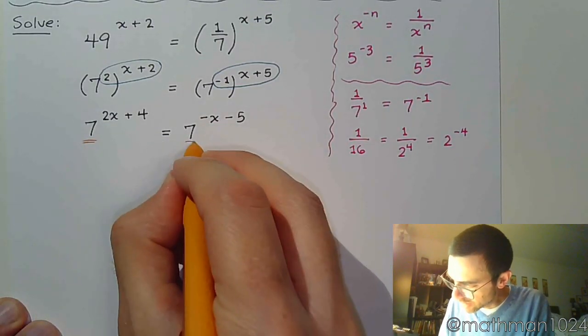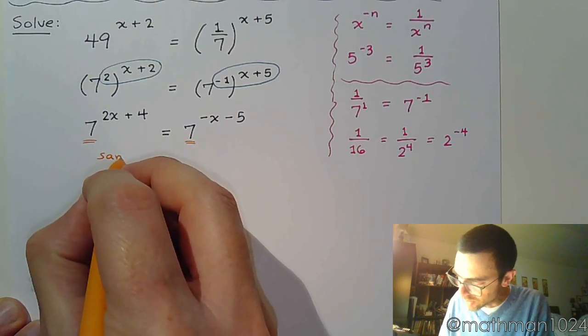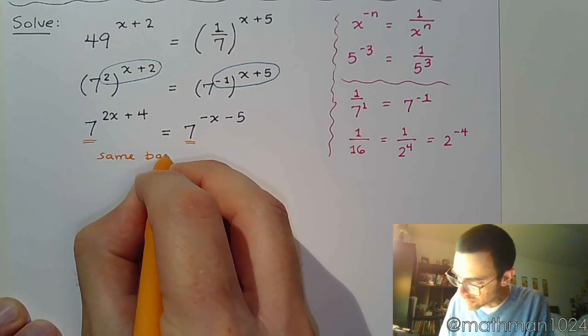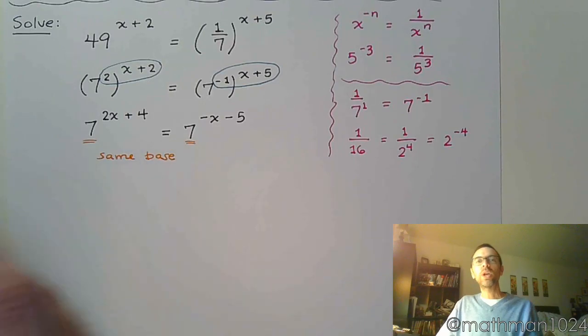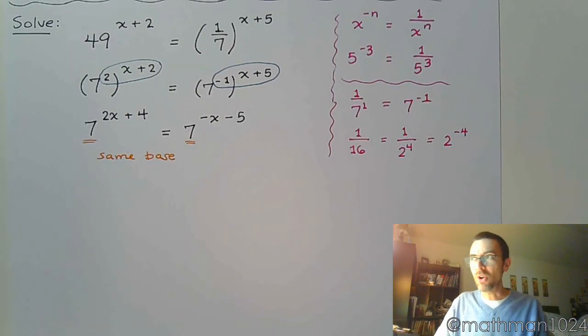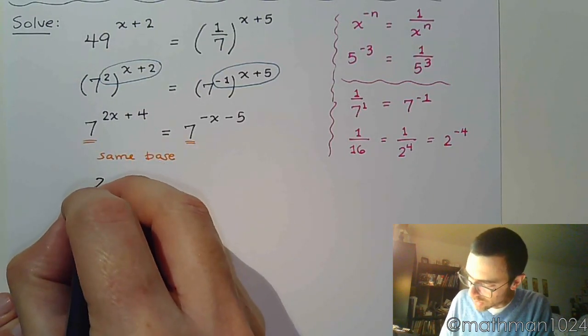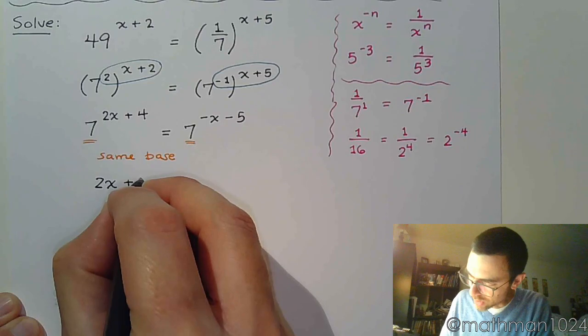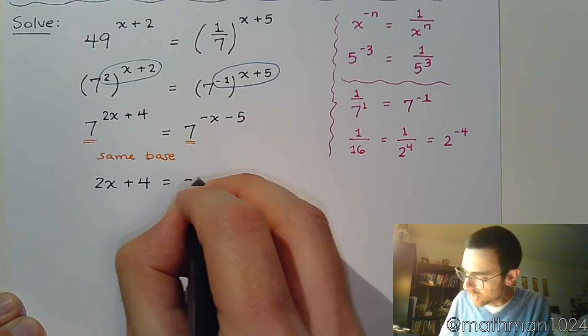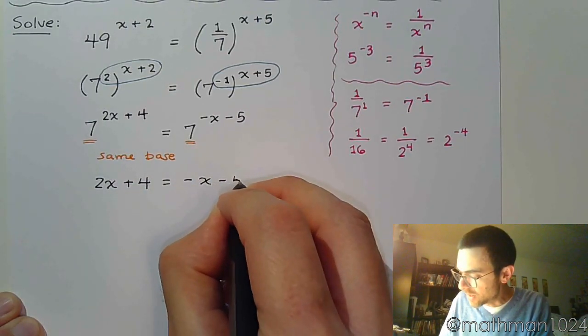And now, since we have the same base, we can write our equation where our variables aren't in the powers anymore, but they're on that nice, plain level where we like to see them. So this becomes 2x plus 4, and we bring down the negative x minus 5 on the right side.